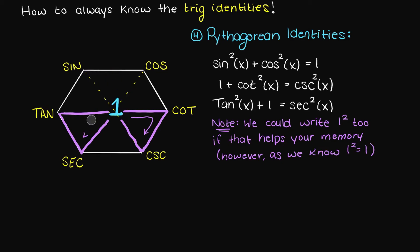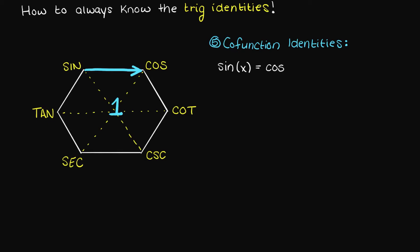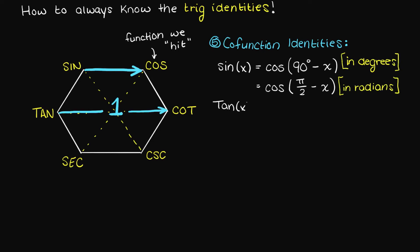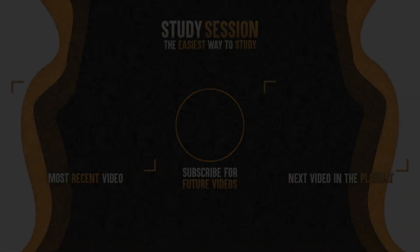Lastly, by moving only right on the hexagon you can easily find the cofunction identities. Starting at sine, we move to the right and multiply the function we hit by 90 degrees — or pi over 2 if you want radians — minus our input, which we typically use x for. This can also be done to find the cofunction identities for tangent and secant.